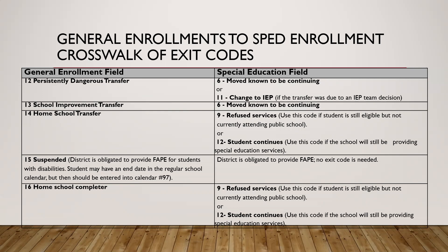General enrollment code 13 (school improvement transfer) corresponds to special ed code 6 (known to continue). Code 14 (homeschool transfer) could be special ed code 9 (refuse services), because the public district does not have to provide special ed services to homeschooled students. You could use code 12 (student continues) only if the district is providing special ed services, which many districts do not do for homeschooled students. Code 15 (suspended) — the district is still obligated to provide FAPE, so the special ed record would not have an exit code; the student should be entered as number 97.